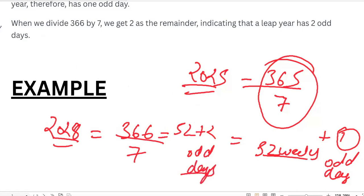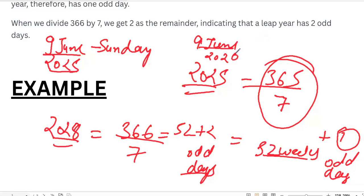Whatever the calendar will change. Say for example, if 9 June is Sunday, 9 June 2025 is Sunday, so 9 June 2026 will be Monday because of that odd day. So if 2026 was a leap year, then 9 June would have been Tuesday. Understood.